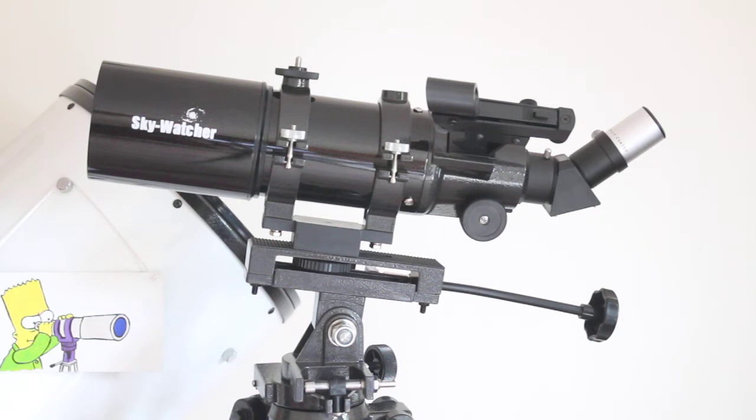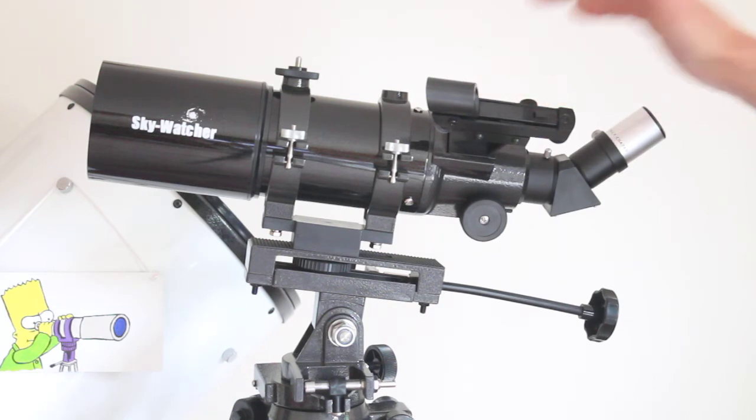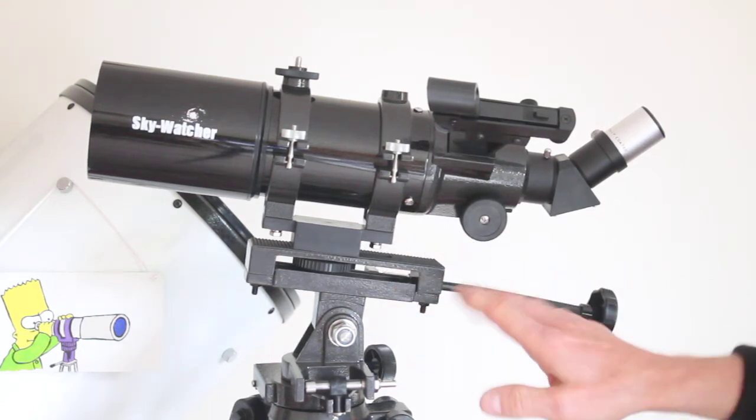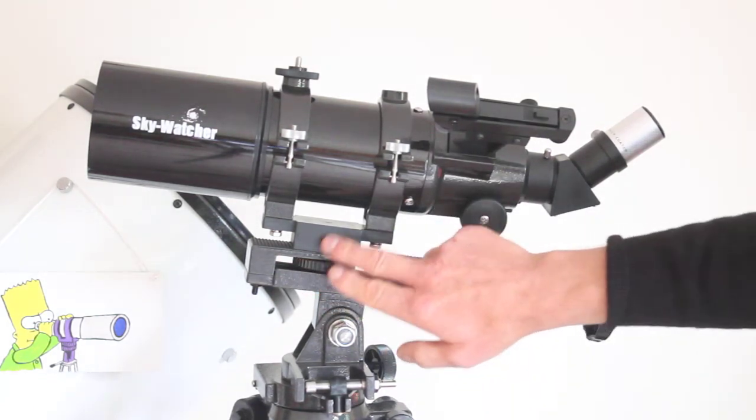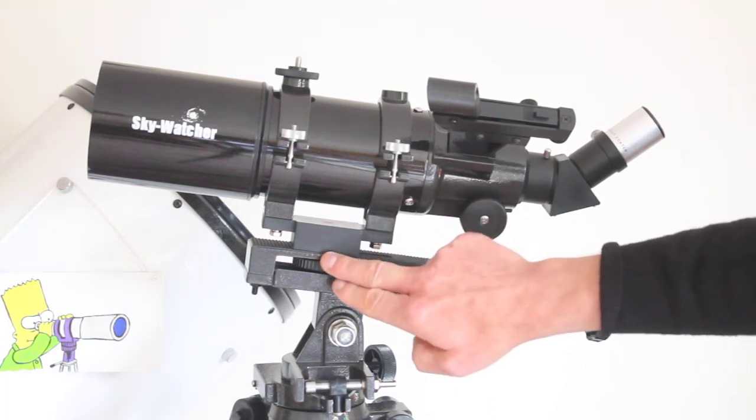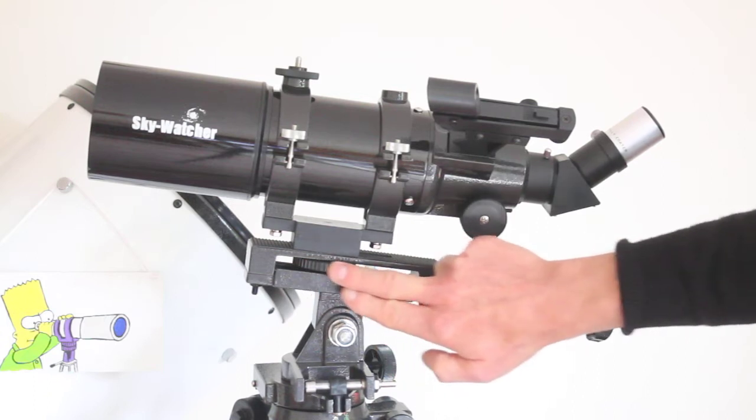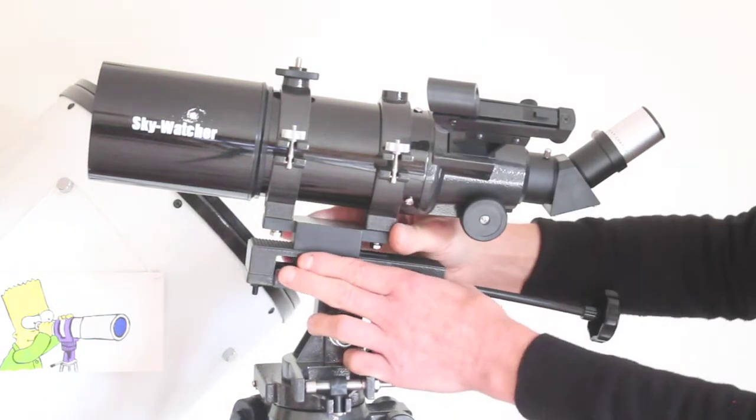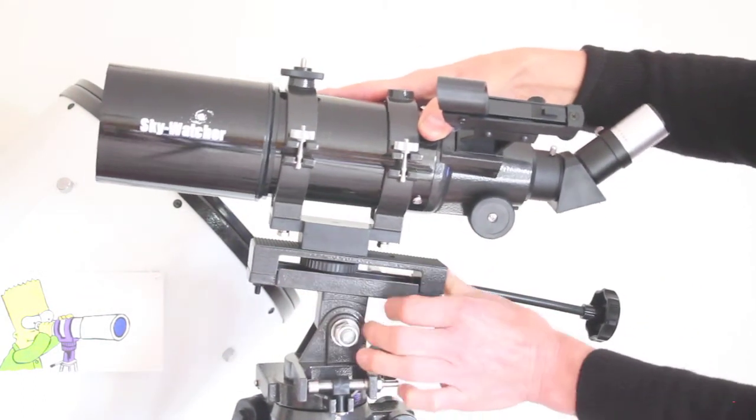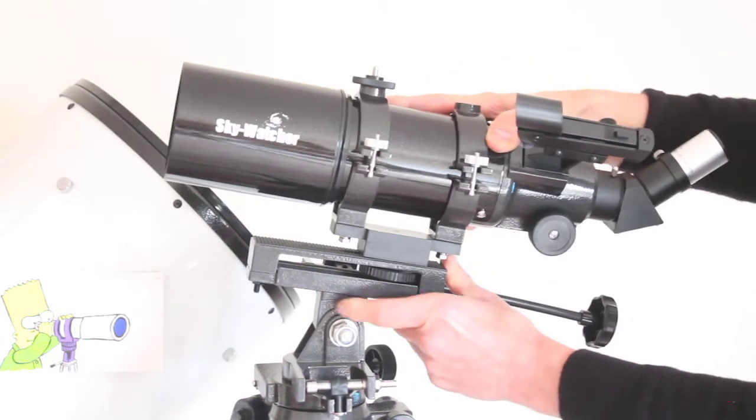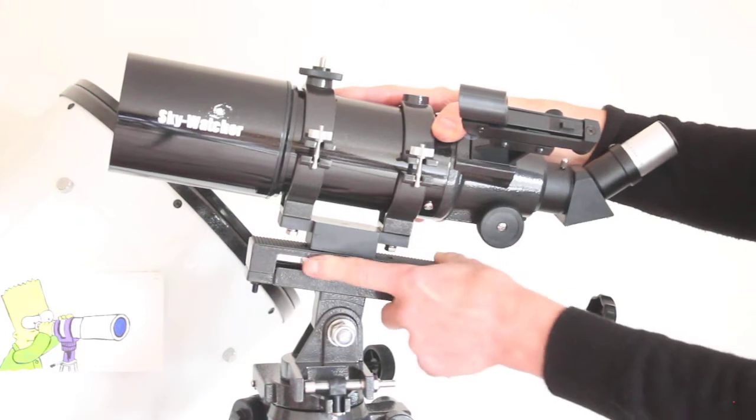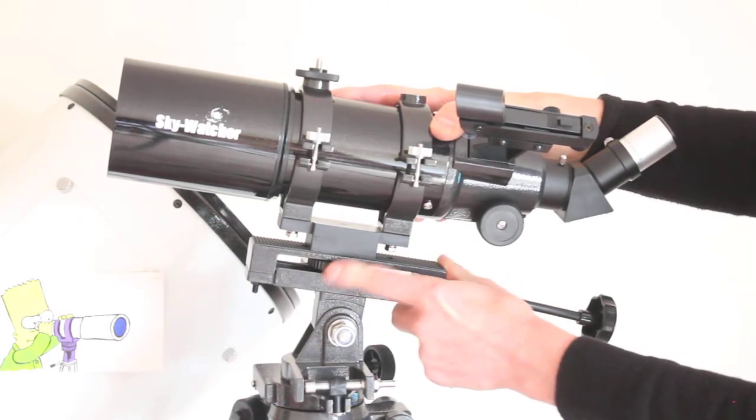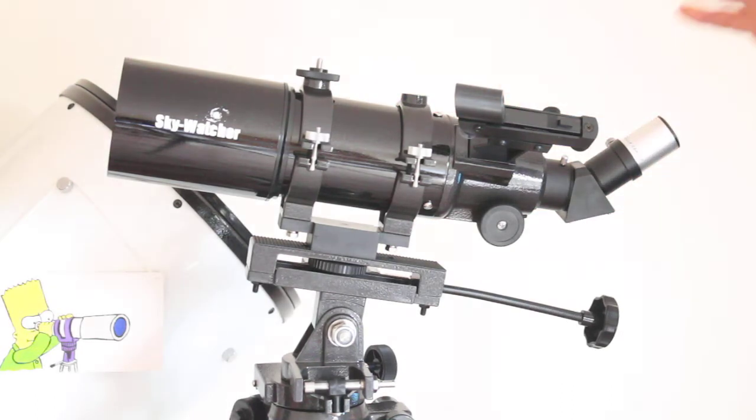This one comes on an alt-azimuth mount. You can also get this as an OTA or optical tube assembly on its own. It just screws in there like a tripod thread straight into the mount with this wheel here that tightens it into place. You can slacken that off and move the telescope forwards and backwards on the mount to get it correctly centered.